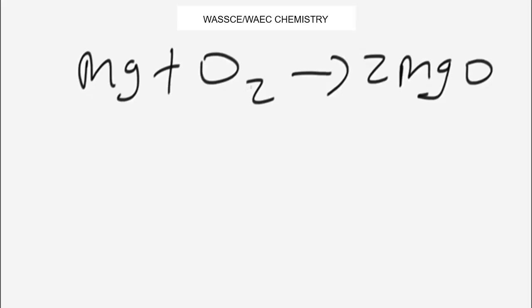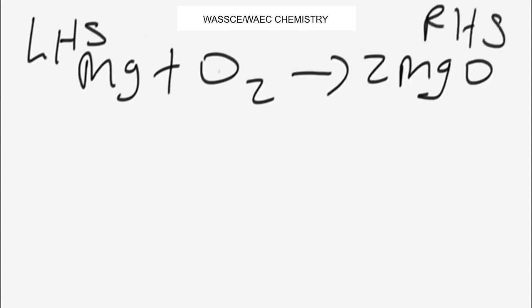Now, to balance a chemical equation we make use of what we call atom counts. In a chemical equation we usually have the left-hand side and the right-hand side. The number of atoms on the left-hand side have to be equal to the number of atoms on the right-hand side.